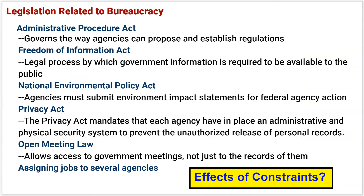Some key legislation constrains the bureaucracy. The Administrative Procedures Act (APA) provides a playbook — policies and procedures for how agencies can create regulations. It outlines how to write regulations, how to propose them, and what process to follow — the entire rulemaking chart we just looked at is largely outlined in the Administrative Procedure Act.